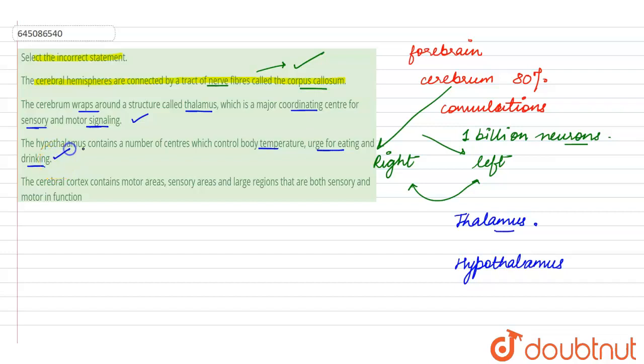So here we see that this statement is also correct. The fourth one says that the cerebral cortex contains motor area, sensory area. So sensory areas are the ones which are going to get the signals from the peripheral areas, organs. Motor areas are the ones which are going to send the signals to the peripheral areas but there are large areas that it says are both sensory as well as motor.